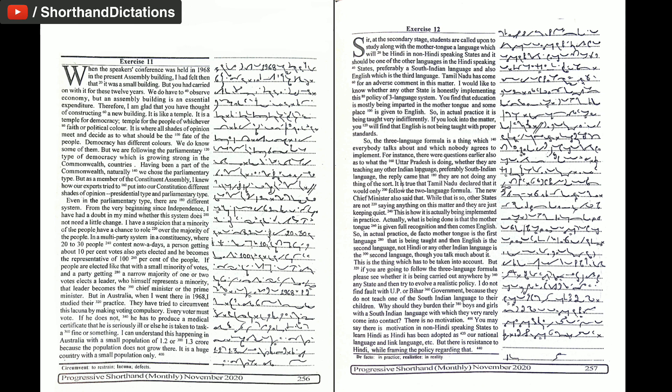It is like a temple. It is a temple for democracy, temple for the people of whichever faith or political color. It is where all shades of opinion meet and decide as to what should be the fate of the people. Democracy has different colors.